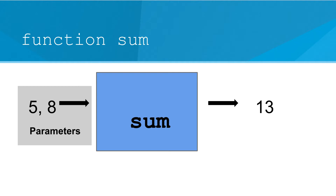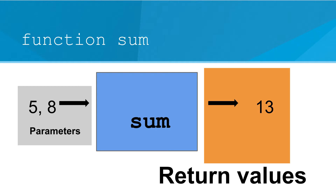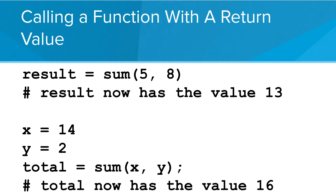In this case, 5 and 8 are the parameters going in, and 13 goes out — that is a return value. In code, it would look like this: result is equal to sum. After executing, the result variable now has the value of 13. We can also pass parameters as variables. If we define x as 14 and y as 2, our total would equal 16 after this line executes.